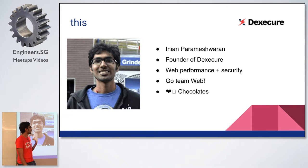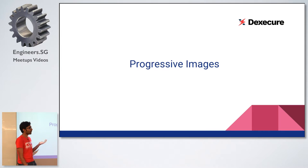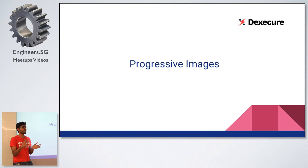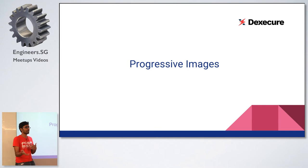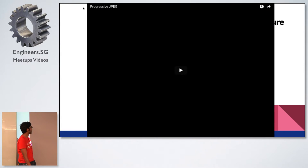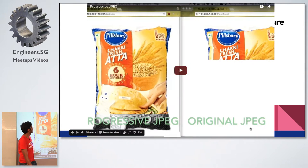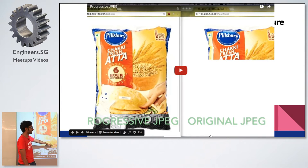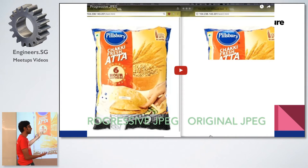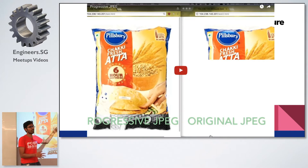So I want to talk about progressive images first. Let me give you a brief introduction to what each technology is — what progressive images are and what HTTP/2 is. The easiest way to explain this is with a video. The one on the left is a progressively encoded image and the one on the right is what you would normally see — it's called a baseline encoding.